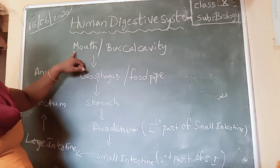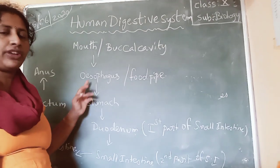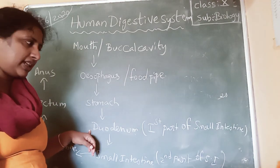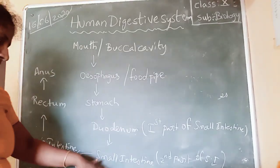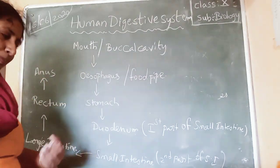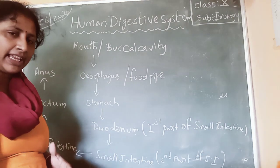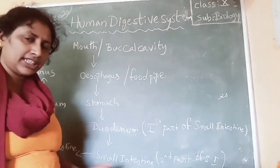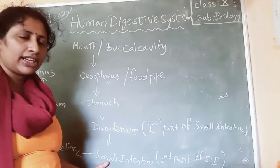So the passage of food starts from the mouth, also called the buccal cavity. From the buccal cavity, food enters the esophagus or food pipe, then into the stomach, then into the duodenum — the first part of the small intestine — and then into the small intestine. Digestion is almost completed in the small intestine, and nutrients are absorbed into the walls of the small intestine.